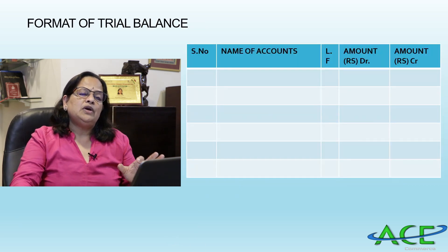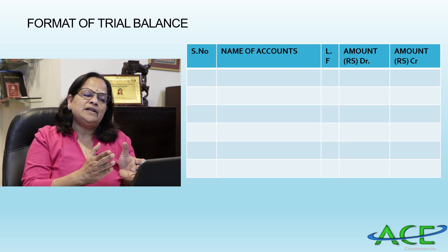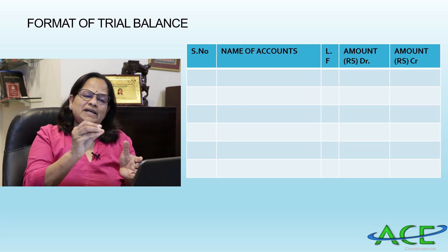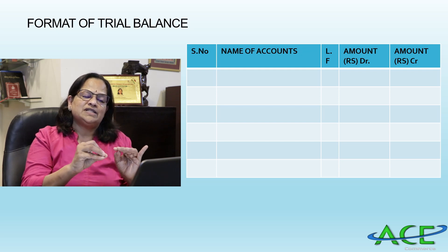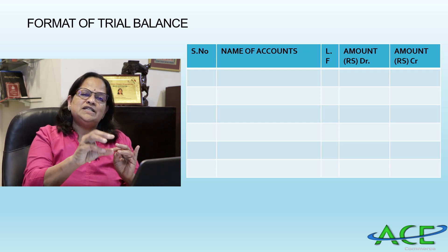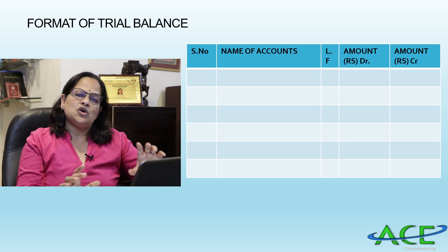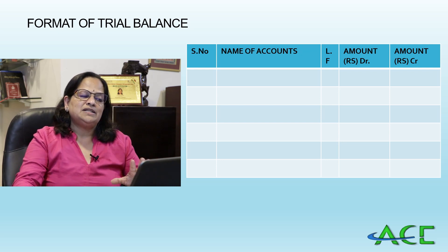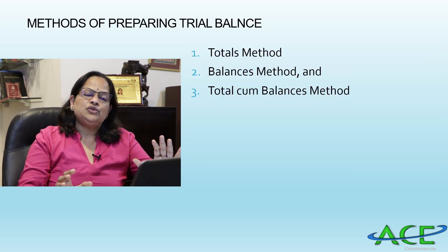The specimen of the trial balance has five columns: serial number, name of accounts, ledger folio, debit balance, and credit balance. The ledger folio column is for reference to the ledger book page number. When doing problems, we leave this column empty, but in actual practice business organizations write the ledger folio page number. This is the format of the trial balance.